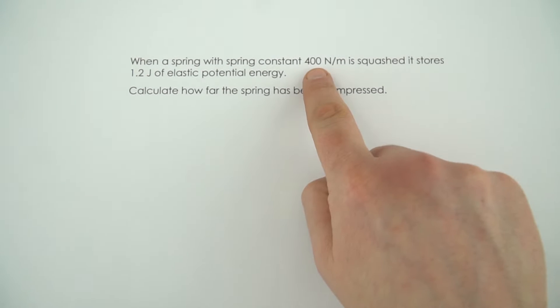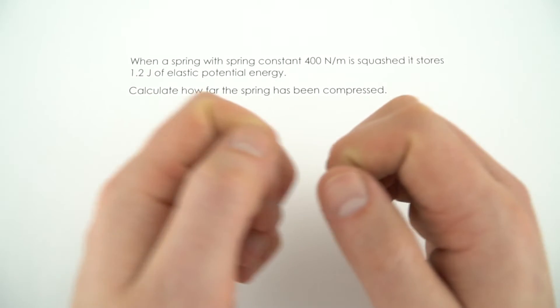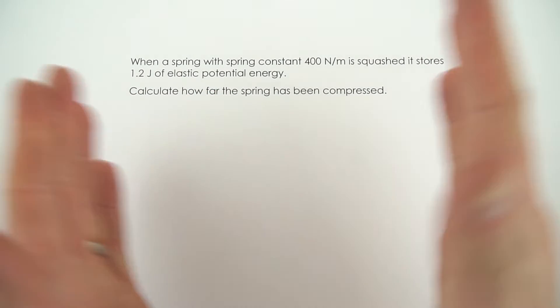In this example there's a very high spring constant of 400 newtons per meter, and here the spring is actually compressed. So although we often think about springs getting longer, you can also have springs that get squashed.